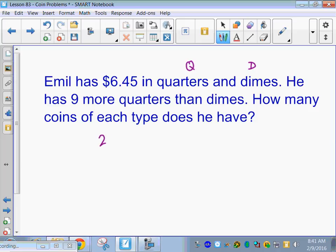Alright, so we're going to do 25Q because each quarter is 25 cents. Okay. Plus 10D, each dime is 10 cents, equals 645. So, again, don't put the decimal in there because we're using 10 and 25. We're using all whole numbers.